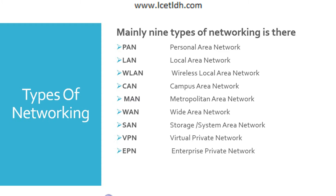Next we have the Wide Area Network (WAN), which is slightly more complex than a LAN. A WAN connects computers across longer physical distances, allowing computers and low-voltage devices to be remotely connected over one large network to communicate even when they are miles apart. For example, if you want to share a file with a person sitting in Canada or any other country, you can do it with the help of a WAN.